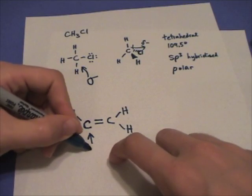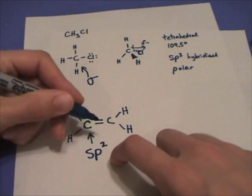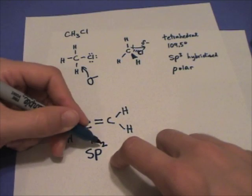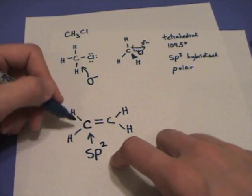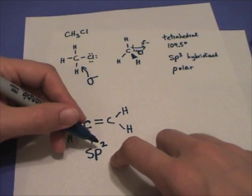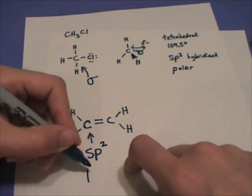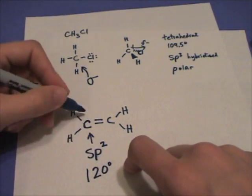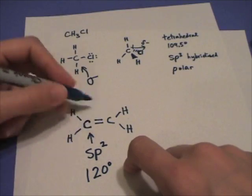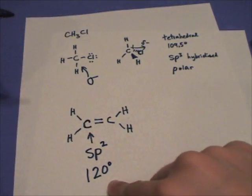This carbon is sp2 hybridized. There's one, two, three. There's three regions getting as far away as possible. So it's called sp2 hybridized and the bond angle would be 120 degrees because there's three regions. 360 divided by three is 120 degrees.